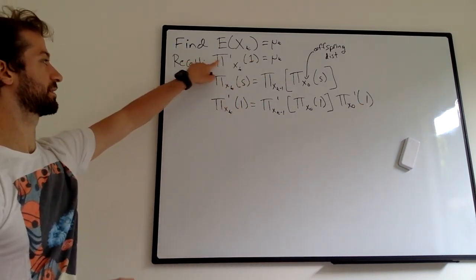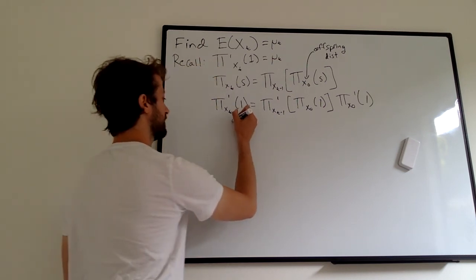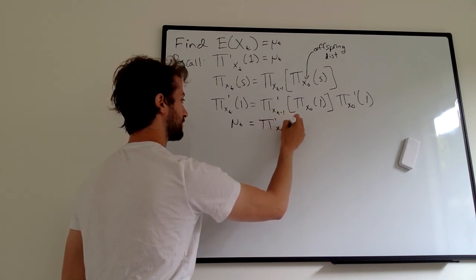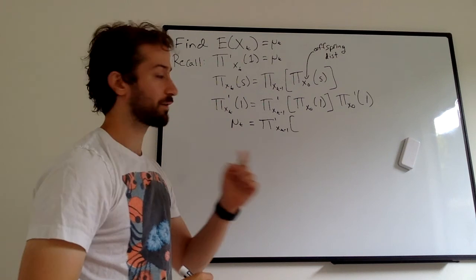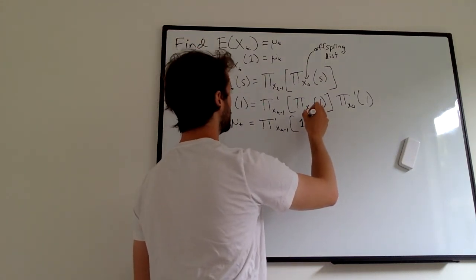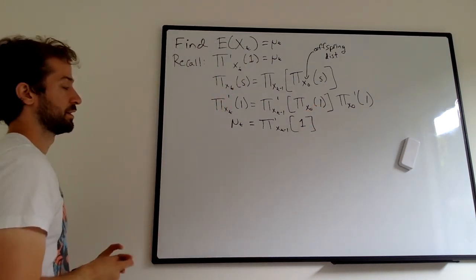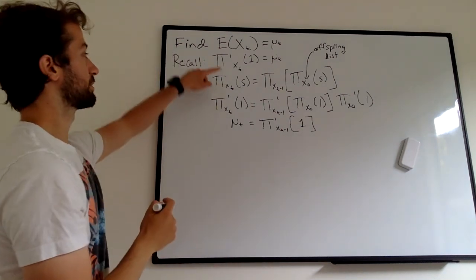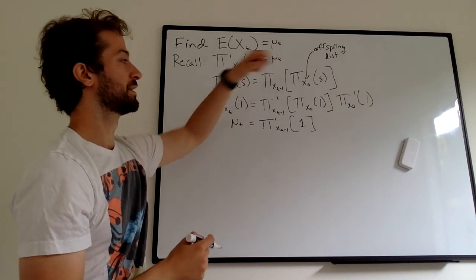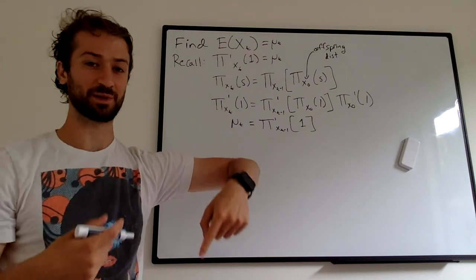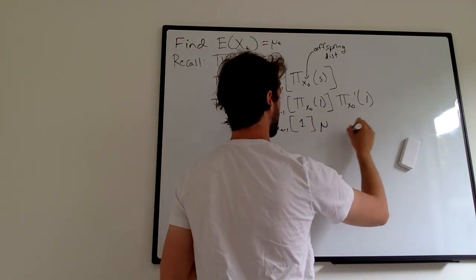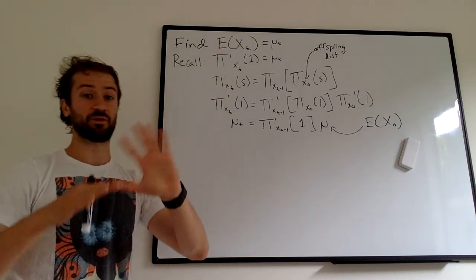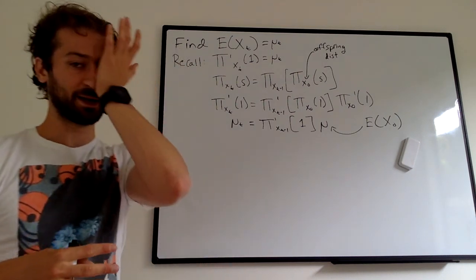On the left side, the derivative of the PGF of X sub t evaluated at one is just mu sub t, which is what we're solving for. The PGF of the offspring distribution evaluated at one equals one — that's a property of probability generating functions. And the derivative of the PGF of the offspring distribution evaluated at one is just mu, the expected number of offspring per cell. Mu sub t is the expected population size at time t, while mu is the mean number of offspring for every single cell.